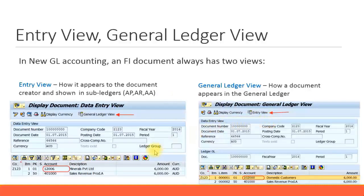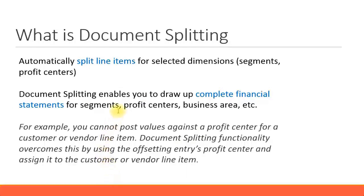Now let's look at what document splitting is. Just like the word itself — document splitting — it doesn't actually split the document into two different documents. What it does is split the line items: sometimes a line item can be split into two different line items, and sometimes the line items remain the same but certain fields are filled in. That is the meaning of document splitting.